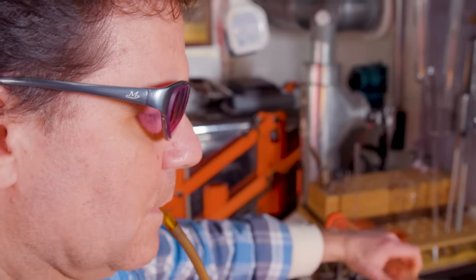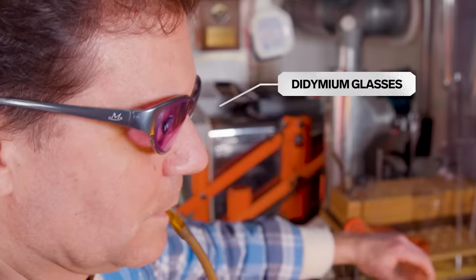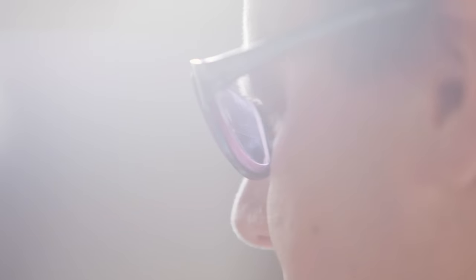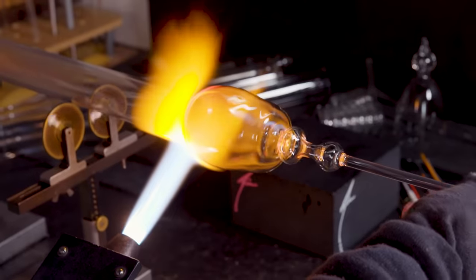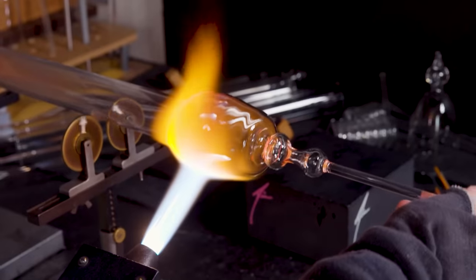While I'm working, I wear didymium glasses. They're made out of a material called neodymium and they filter out the sodium wavelength in the flame, which is the bright yellow. And it allows me to see into the wall thickness of the glass when I'm heating it.